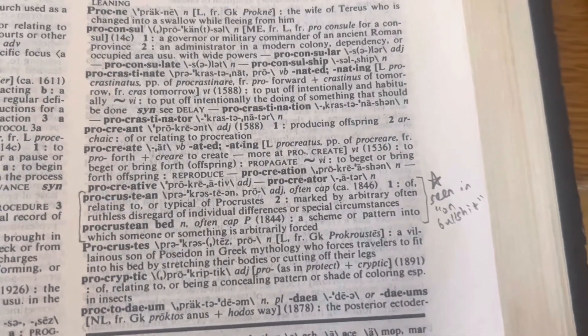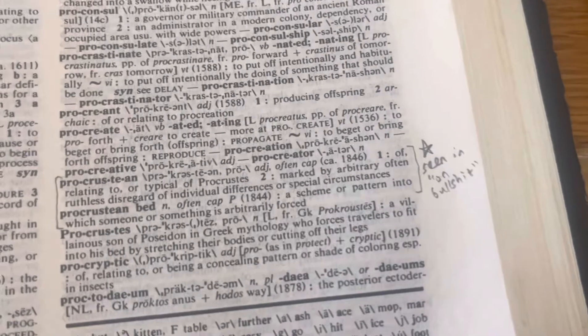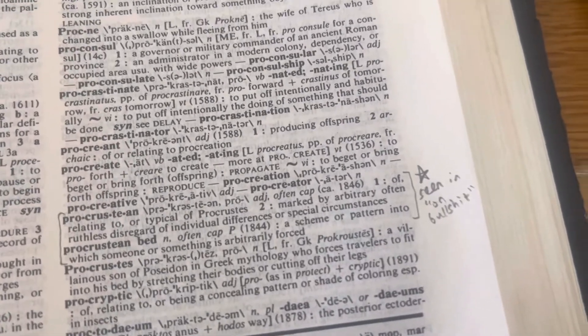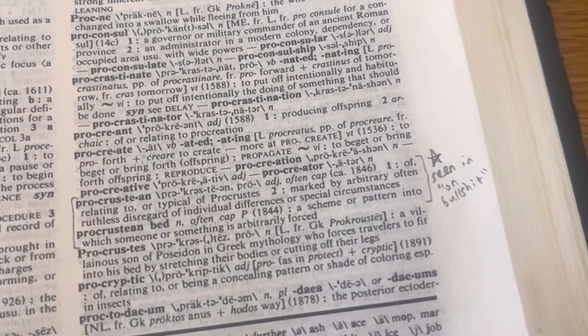And it looks like Procrustean means of relating to or typical of Procrustes, a man I'm unfamiliar with, or marked by arbitrary, often ruthless disregard of individual differences or special circumstances.